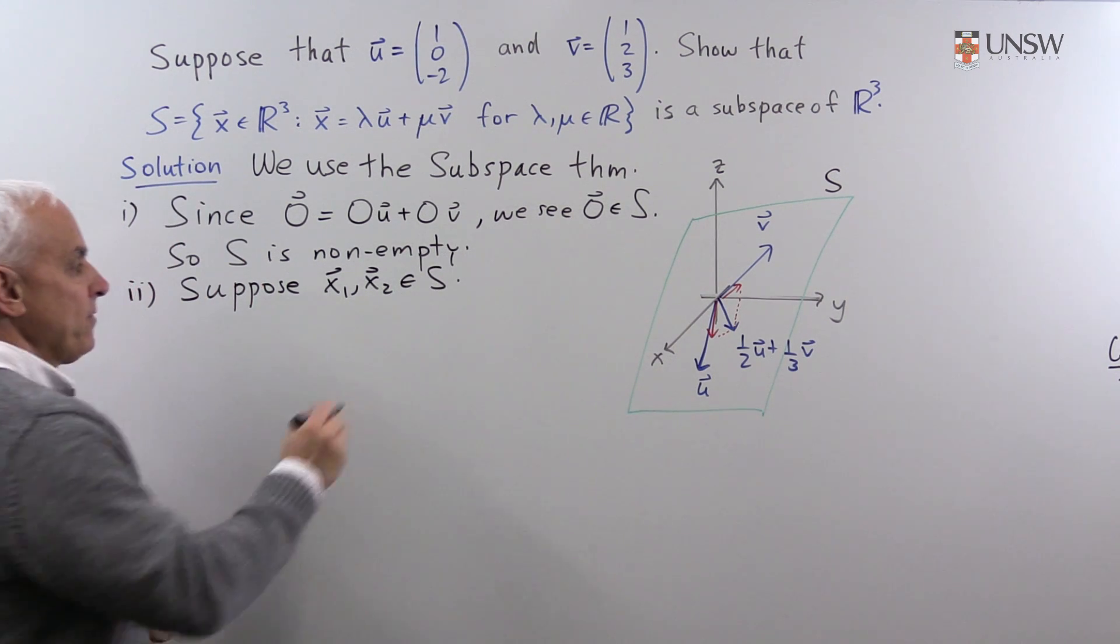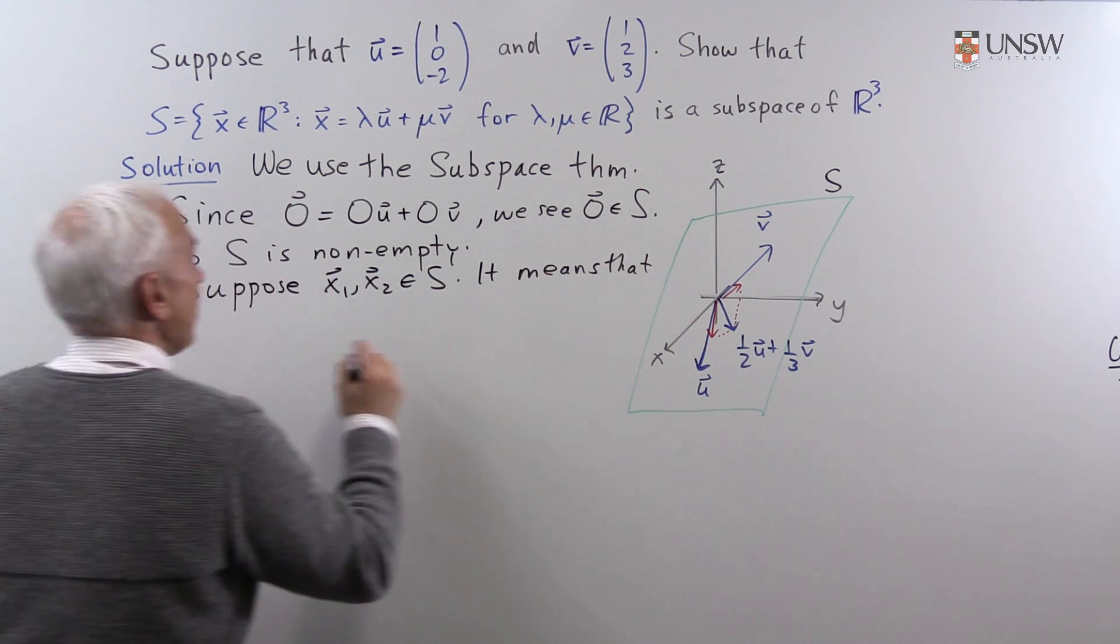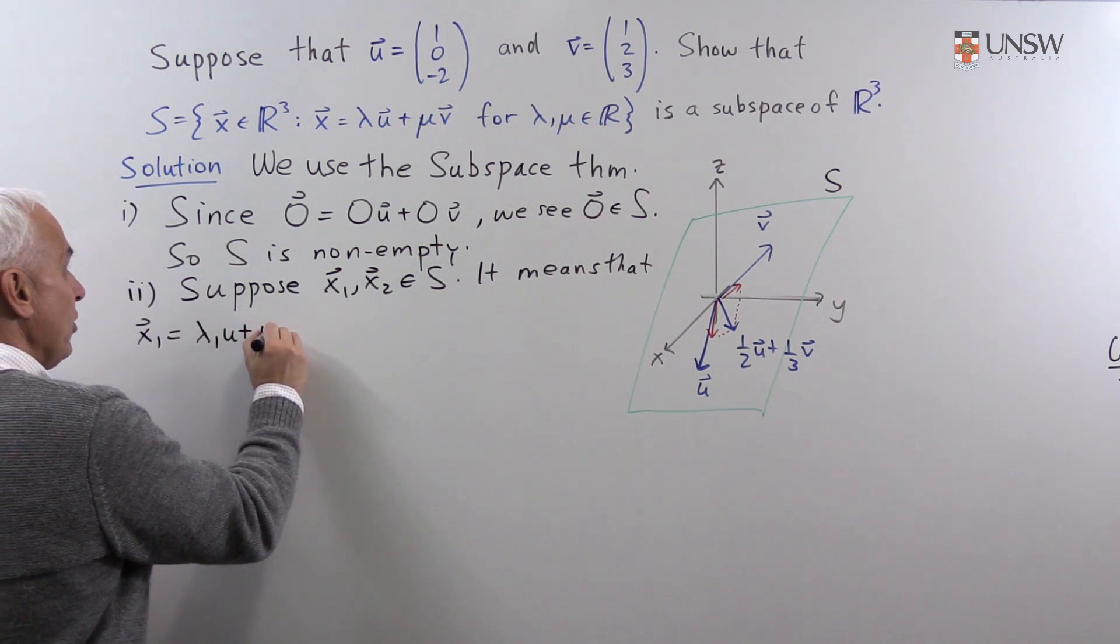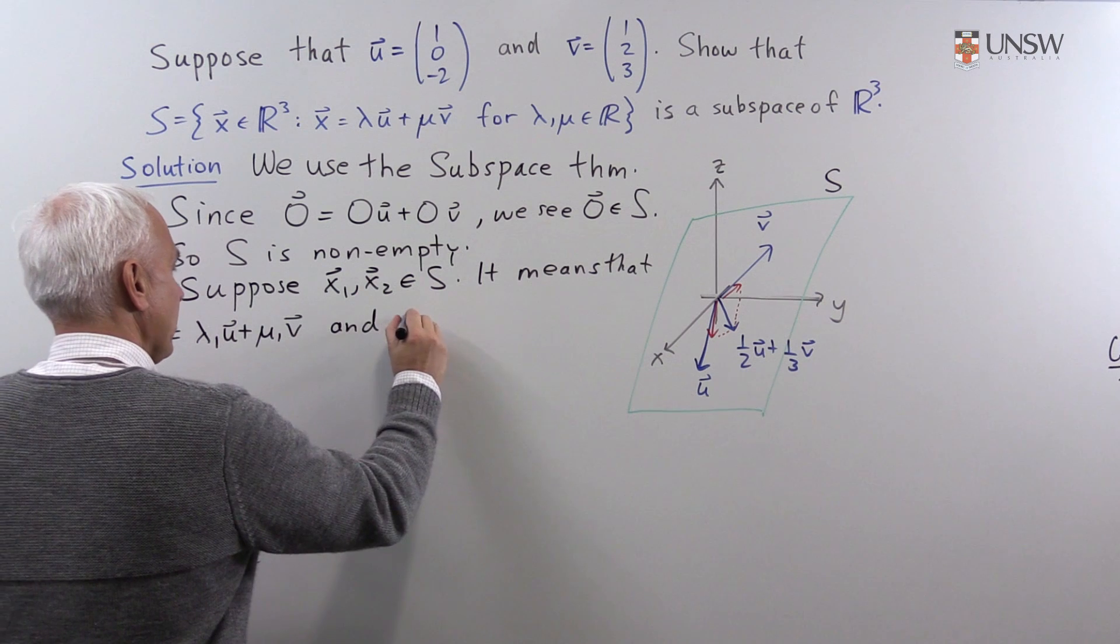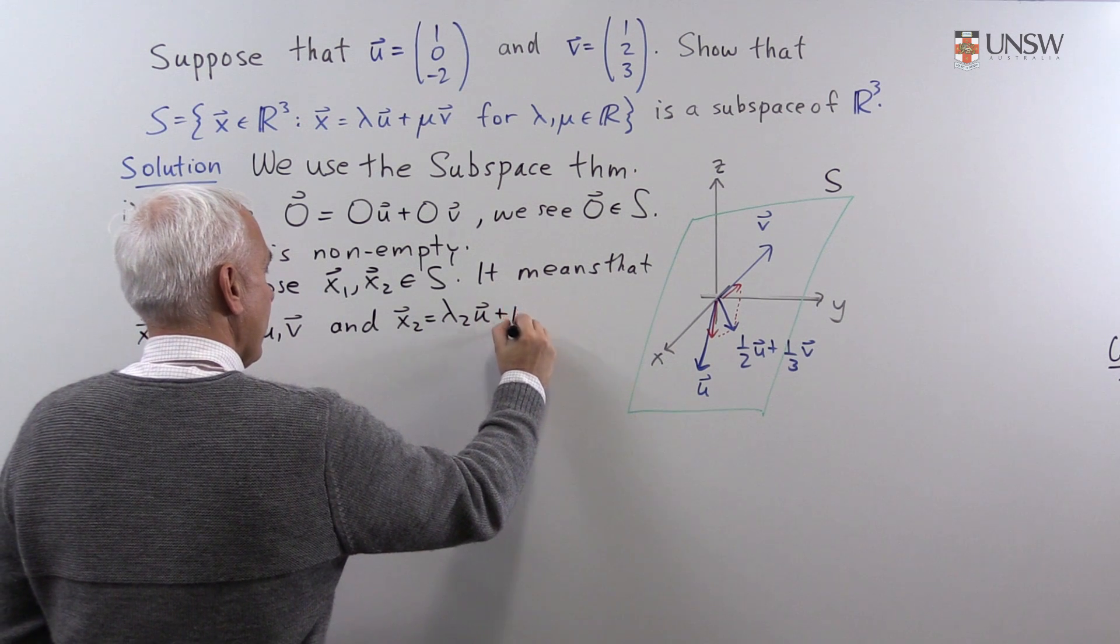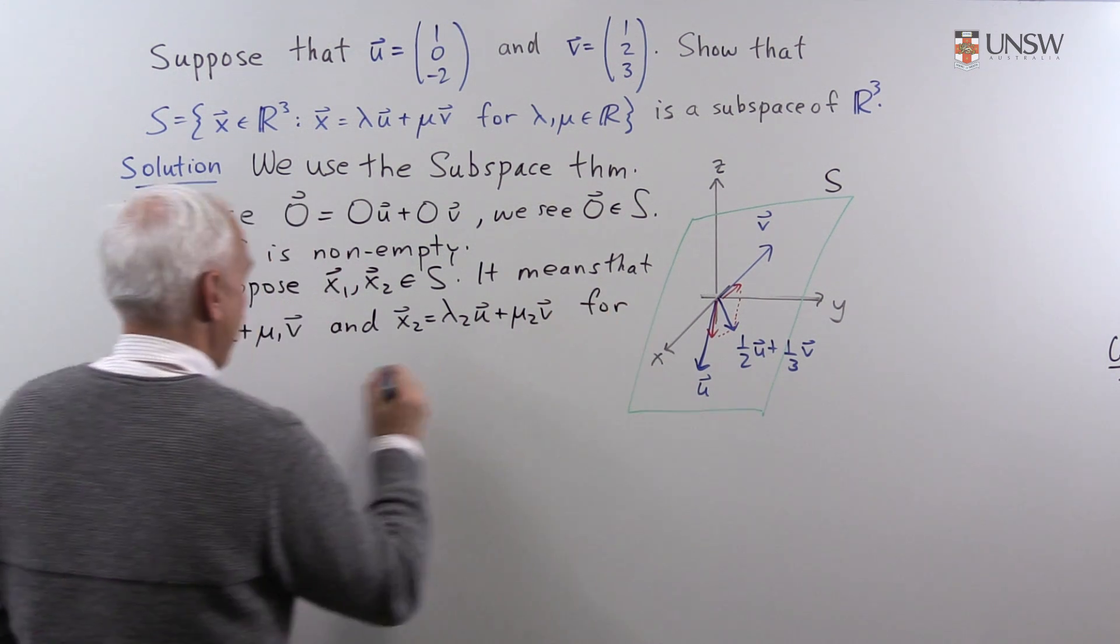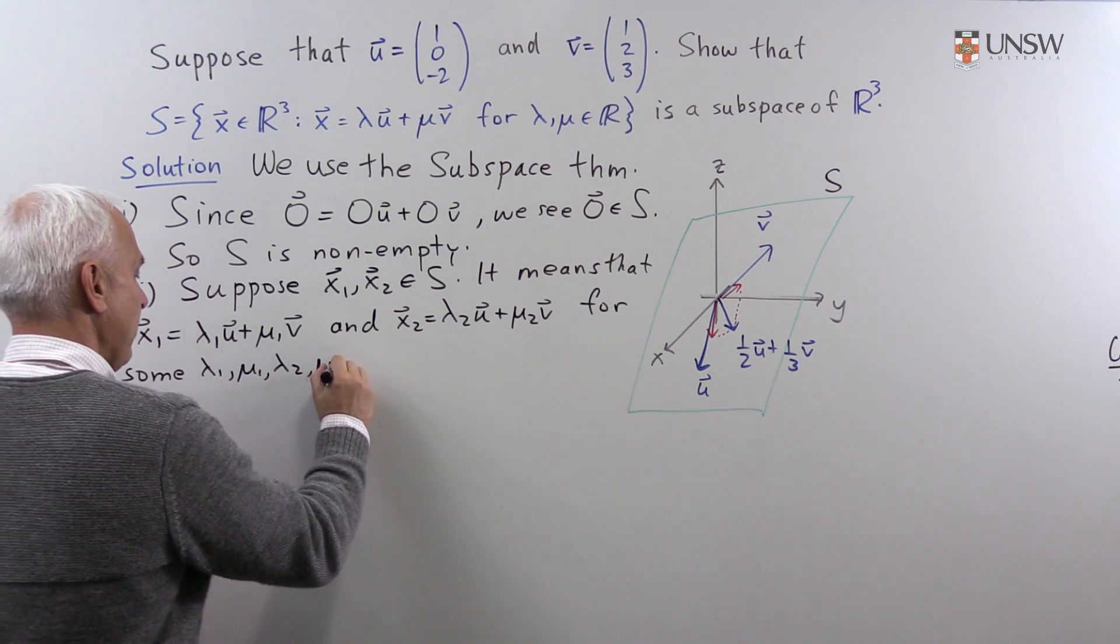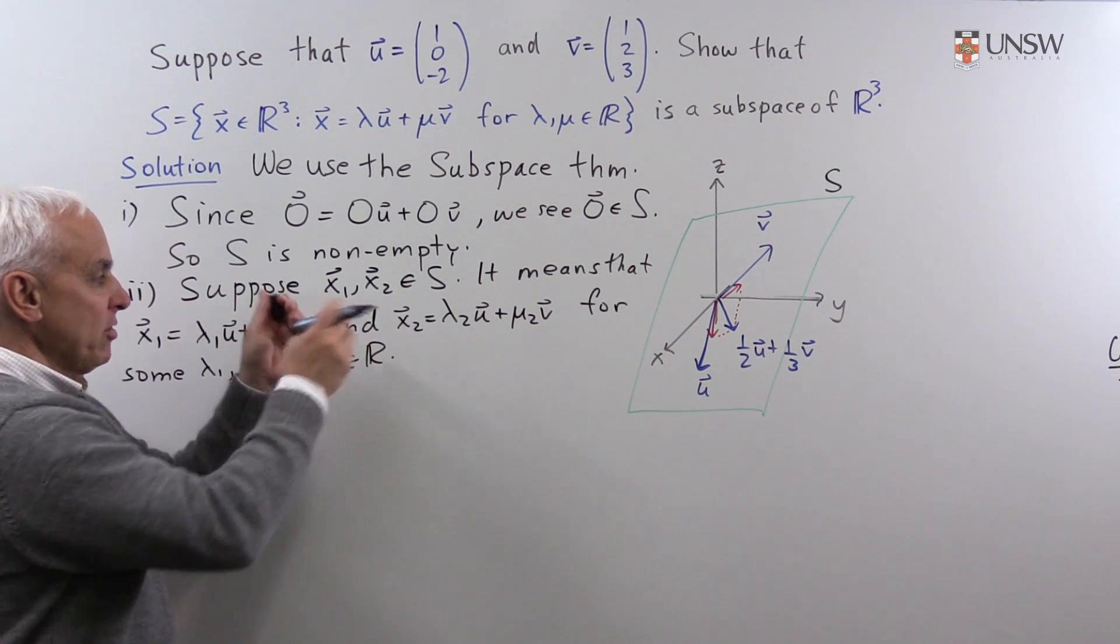What does that mean? So it means that we can write x₁ as, say, λ₁u plus μ₁v and x₂ equals λ₂u plus μ₂v. So that's what it means for this vector and this vector to be in S.